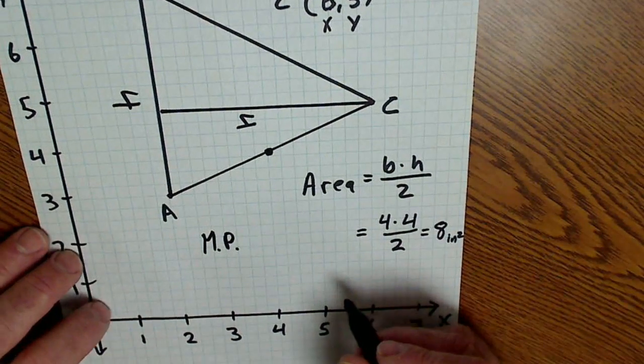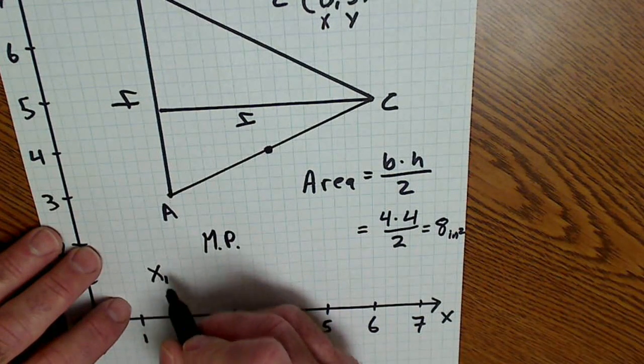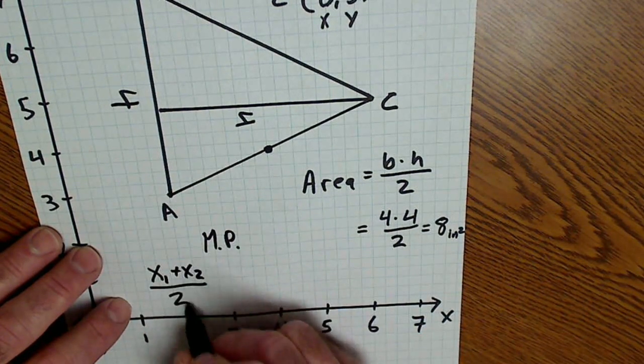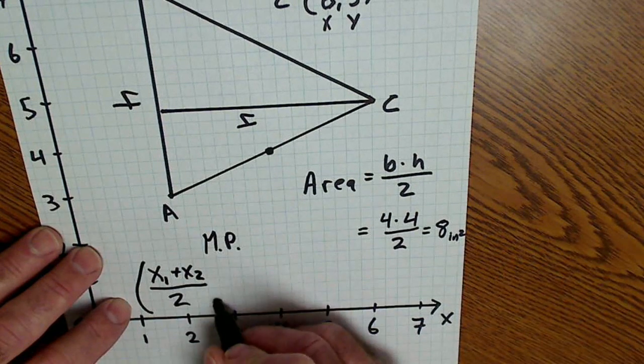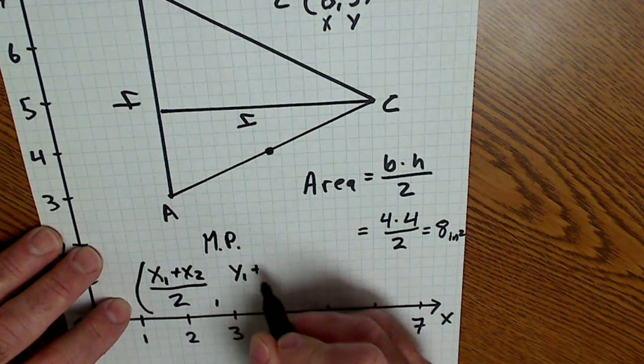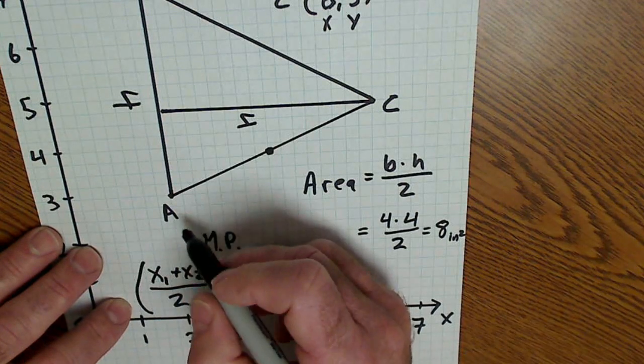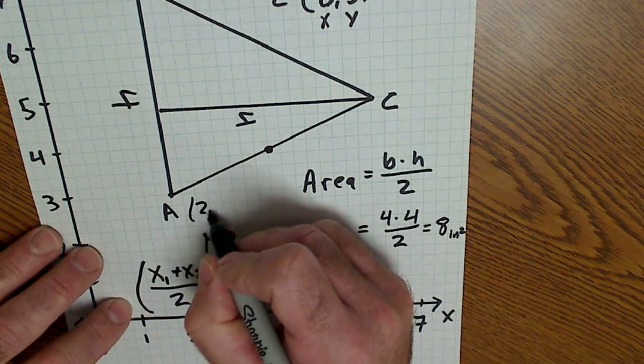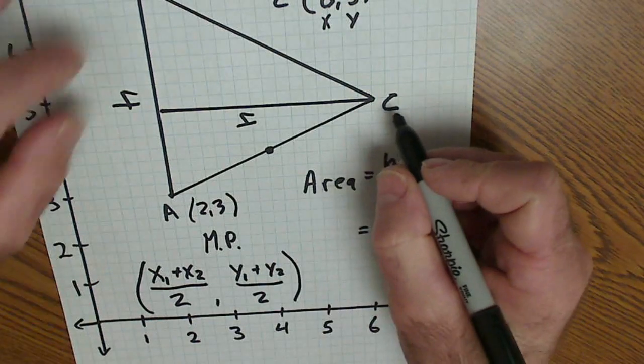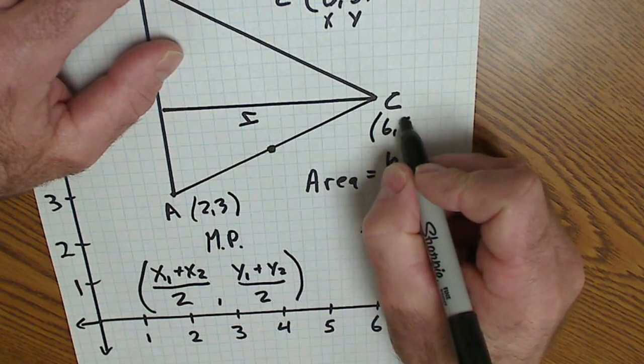The midpoint formula is one X value plus the other X value divided by 2, and the Y values added together, divided by 2. So the coordinate of A was 2, 3. The coordinate of C was 6, 5.